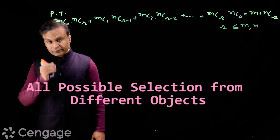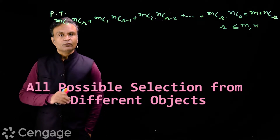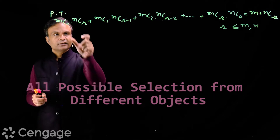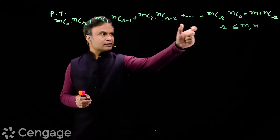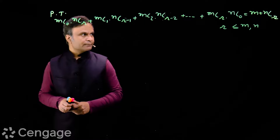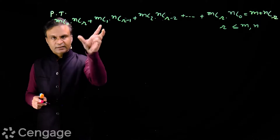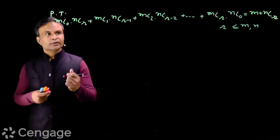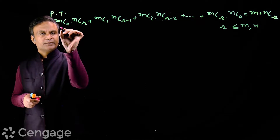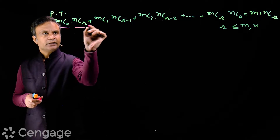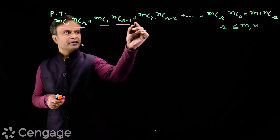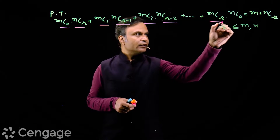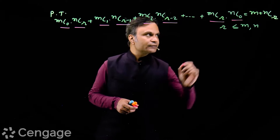We have this one very interesting question. Using the concept of all possible selections, we have to prove that the sum of this series is equal to m+nCr. Looking at the terms of the series: mC0·nCr, mC1·nCr-1, mC2·nCr-2, and mCr·nC0.